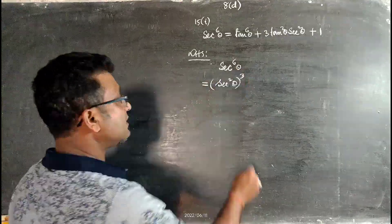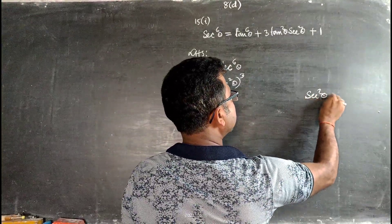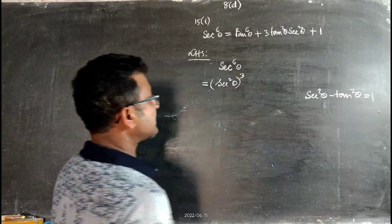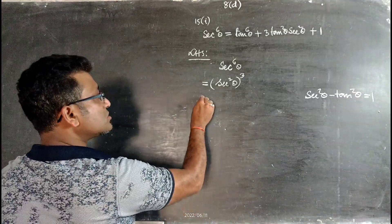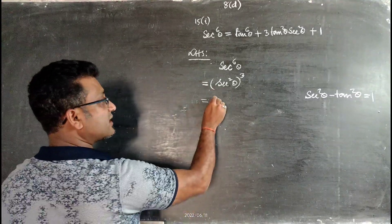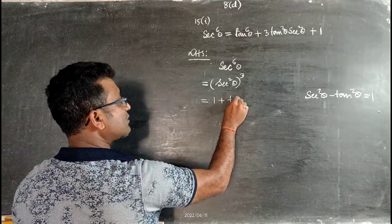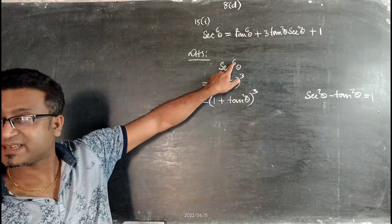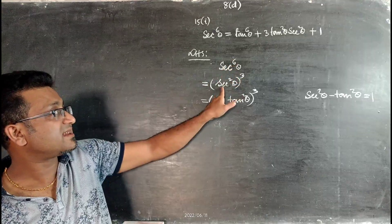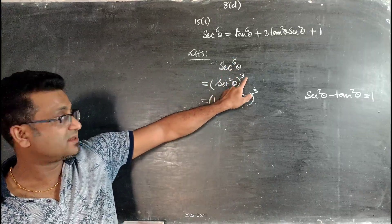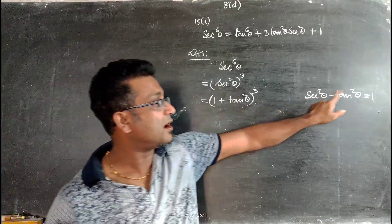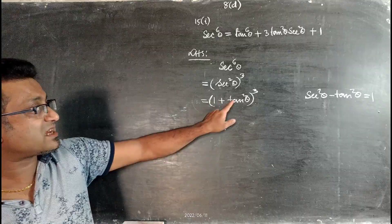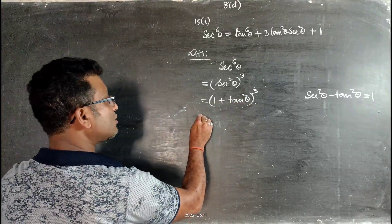We know sec²θ - tan²θ = 1, so sec²θ = 1 + tan²θ. Instead of sec²θ we write 1 + tan²θ, so sec⁶θ becomes (1 + tan²θ)³. Now this is in the form (a + b)³.